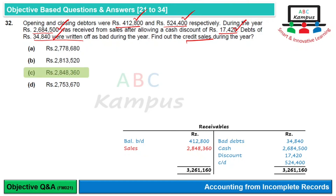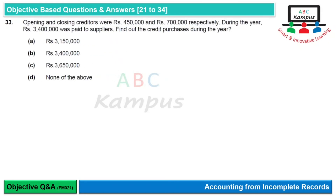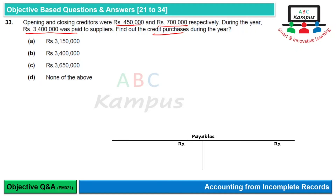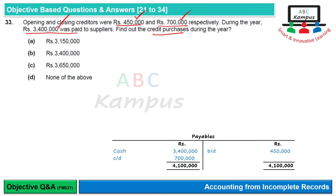Question 33: Opening and closing creditors were Rs. 450,000 and Rs. 700,000 respectively. During the year Rs. 3.4 million was paid to suppliers. Find credit purchases। Payable का account बनाते हैं: opening payables Rs. 450,000, closing payables Rs. 700,000, payment to suppliers Rs. 3.4 million — debit side पर reflect होगी। As a balancing figure credit purchases = Rs. 3.65 million। Option C is correct।